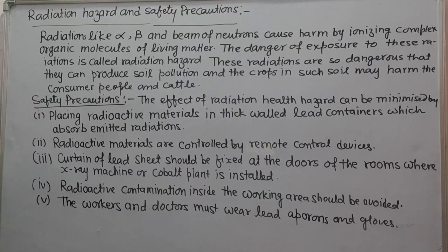Safety precautions: The effect of radiation health hazard can be minimized by number one, placing radioactive materials in thick-walled lead containers which absorb emitted radiations. Number two, radioactive materials are controlled by remote control devices. Number three, curtain of lead sheet should be fixed at the doors of the rooms.